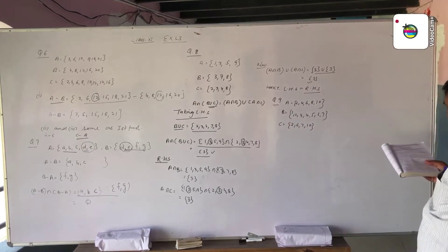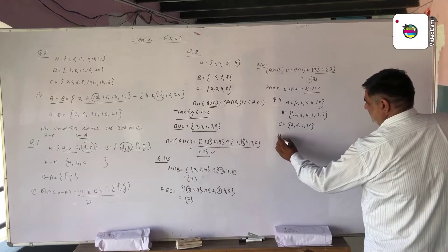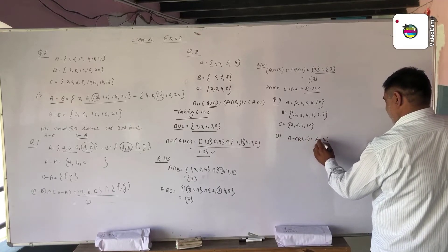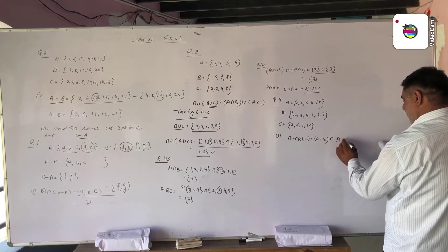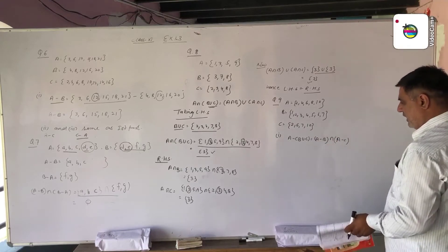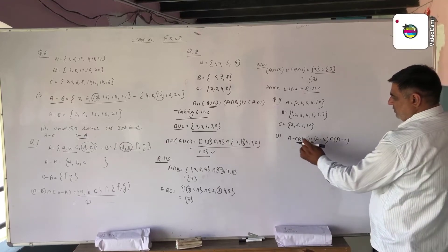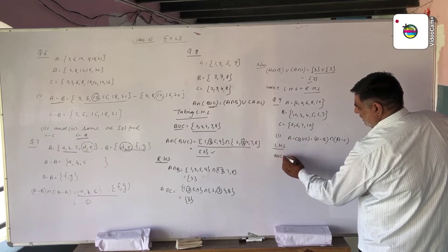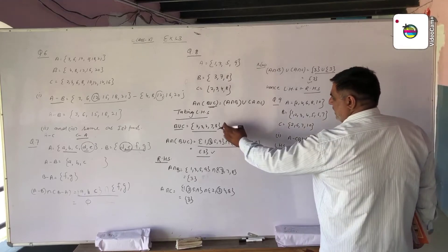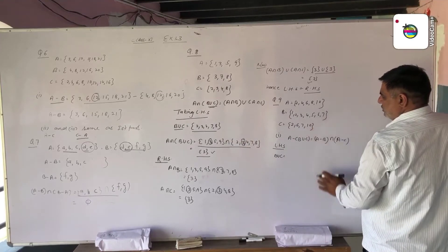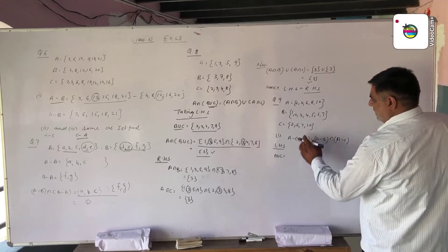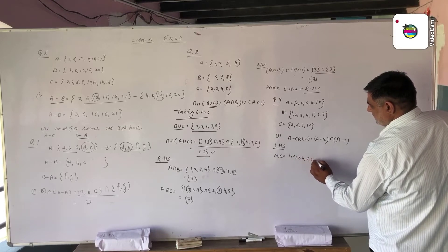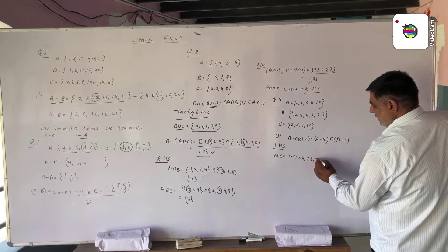We show that A difference (B union C) equals (A minus B) intersection (A minus C). In left hand side, first we find B union C. B union C takes those elements which are in B and C including common elements: 1, 2, 3, 4, 5, 6, 7 and then 10.